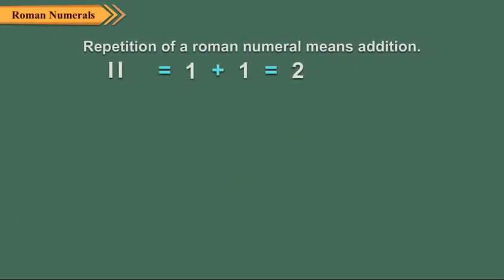The rules for writing Roman numerals sound difficult but are actually very simple. Repetition of a Roman numeral means addition. For example, in II, the symbol has been repeated twice. So, its value is 1 plus 1 which is equal to 2.